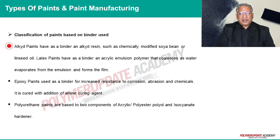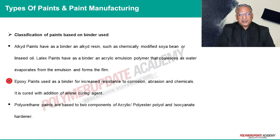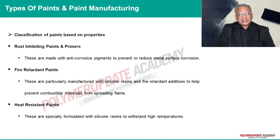Classification of paints based on binders used: Alkyd paints have alkyd resin as a binder, which is chemically modified soybean or linseed oil. Latex paints have acrylic emulsion polymer as a binder that coalesces as water evaporates from the emulsion and forms the wet film. Epoxy paints use epoxy resin as a binder for increased resistance to corrosion, abrasion, and chemicals.